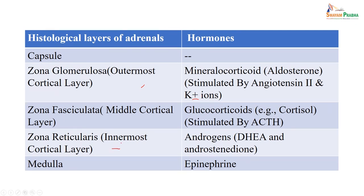Going to the more innermost layer, the zona reticularis, which releases androgens: DHEA or androstenedione. And in the medulla, which releases norepinephrine and epinephrine. So from this capsule: the outermost produces mineralocorticoids — which affect electrolytes; zona fasciculata produces glucocorticoids like cortisol, affecting carbohydrate, fat, and protein metabolism; zona reticularis produces androgens; and the medulla produces epinephrine and norepinephrine.